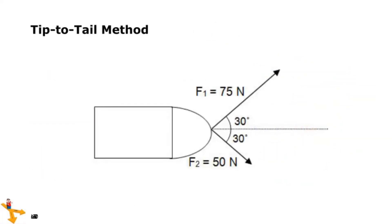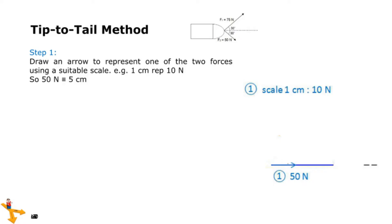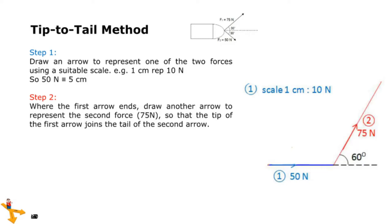Tip-to-tail method. Step 1: Draw an arrow to represent one of the two forces using a suitable scale. Note, 1 centimeter represents 10 newtons. So 50 N equals 5 centimeters. Step 2: Where the first arrow ends, draw another arrow to represent the second force, 75 N, so that the tip of the first arrow joins the tail of the second arrow.